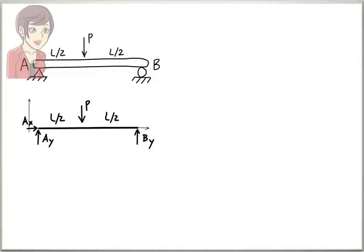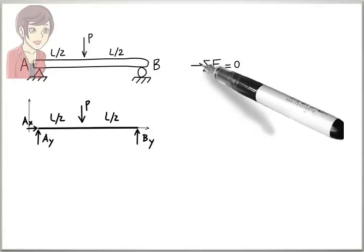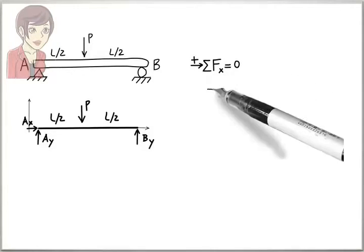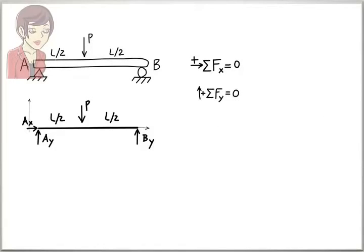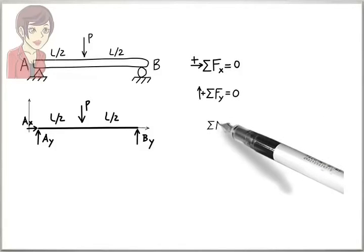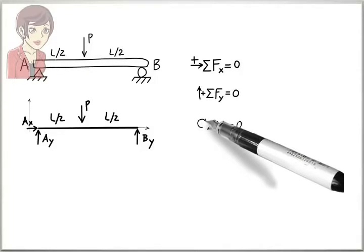To determine the support reactions, that is, to analyze the beam, we use three equations: 1. Sum of the forces in the X direction must be zero. 2. Sum of the forces in the Y direction must be zero. 3. Sum of the moments about the Z axis at, say point A, must be zero.